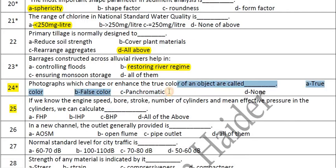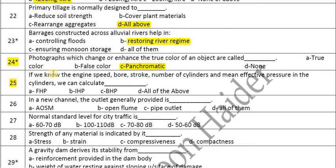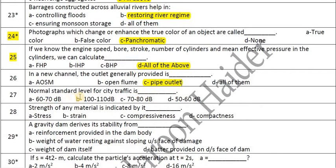Photographs which change or enhance the true color of objects are called chromatic. If we know the engine speed, bore, stroke, number of cylinders, and mean effective pressure, we can calculate FHP, IHP, BHP — all of the above. The outlet type provided at the end of a new channel is a pipe outlet. The normal standard noise level for city traffic is 72 to 80 decibels.